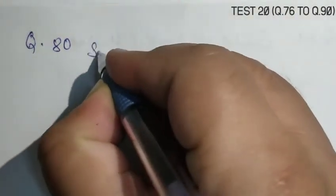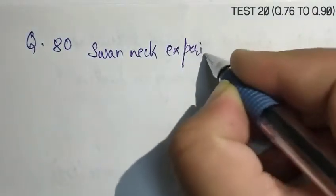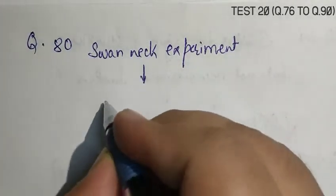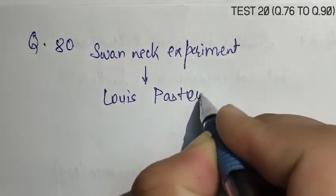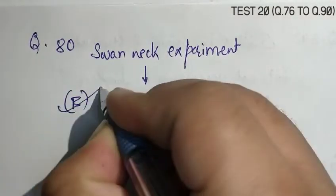Question number 80, the scientists related with the overthrow of the theory of spontaneous generation and experiments with swan flask. Swan neck experiment was performed by Louis Pasteur. So, the correct answer is B. Louis Pasteur.